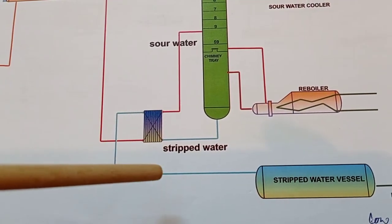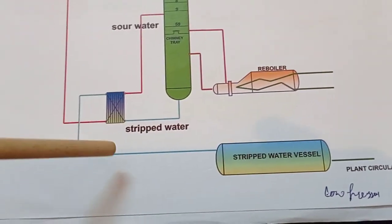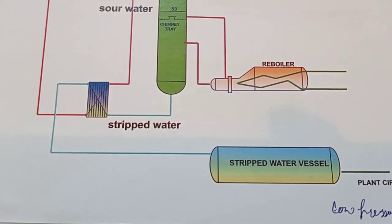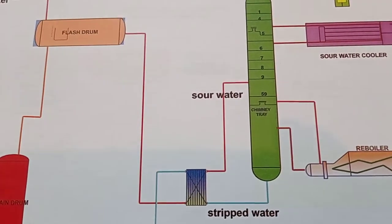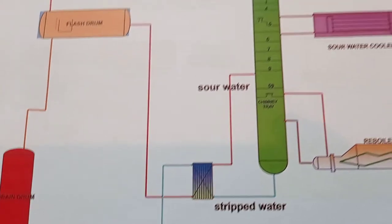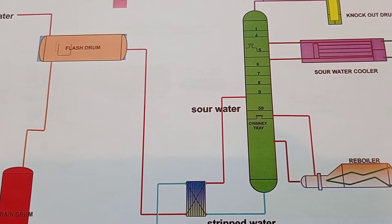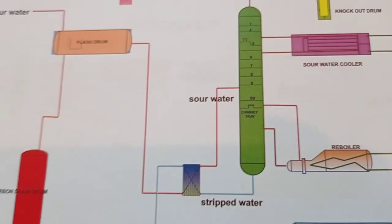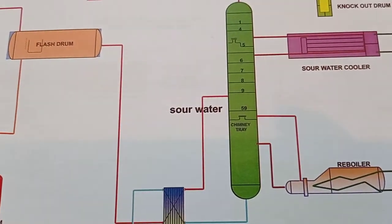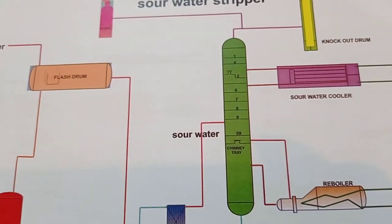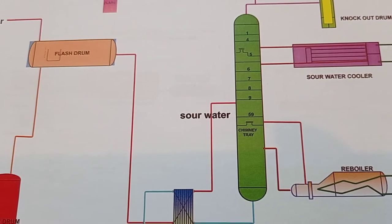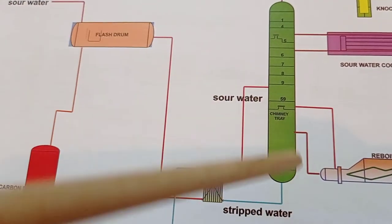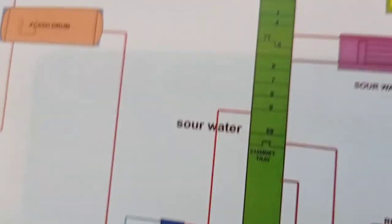The resultant water — strip water — goes through the interchanger and additional exchangers to a strip water vessel. Strip water is used in the sulfur recovery unit, tail gas treating unit (TGT), hydrocracking unit, flare unit, and ETP. It circulates back through these units, becomes sour water again, and the cycle repeats. Sour water contains H₂S; strip water is the water from the stripper that does not contain H₂S.